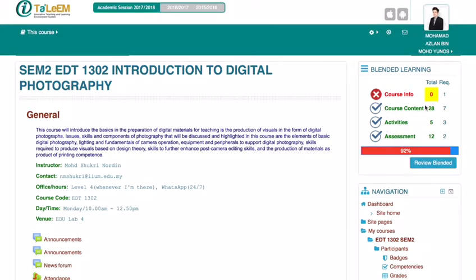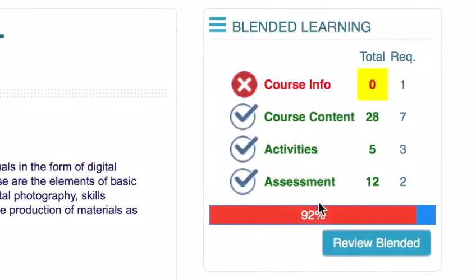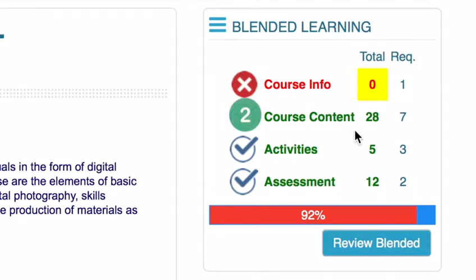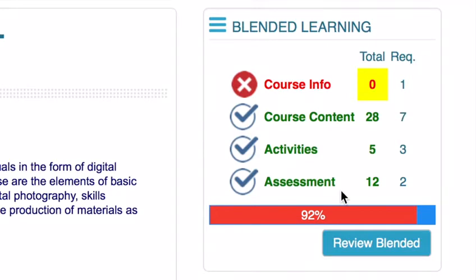There are four components. Number one, course info. Number two, course content. Number three, activities. And lastly, assessment.